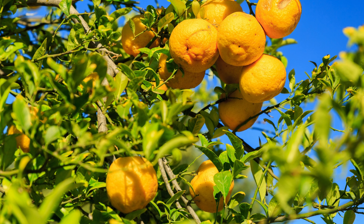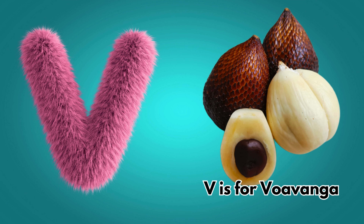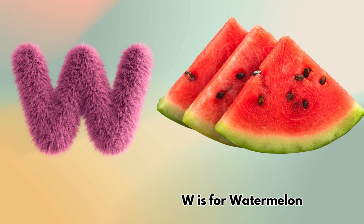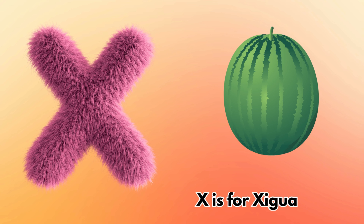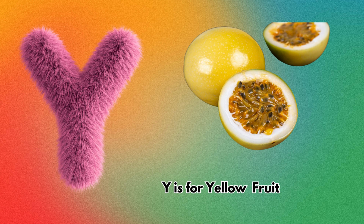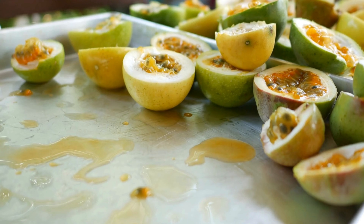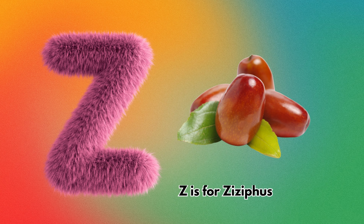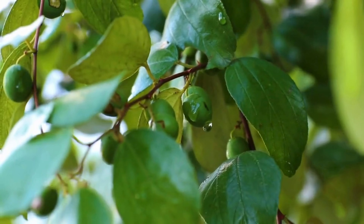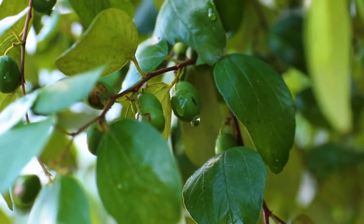U is for ugli fruit. V-v-v, V is for voavanga. W-w-w, W is for watermelon. X-x-x, X is for xigua. Y-y-y, Y is for yellow passion fruit. Z-z-z, Z is for ziziphus. Now we've sung the fruit ABCs.